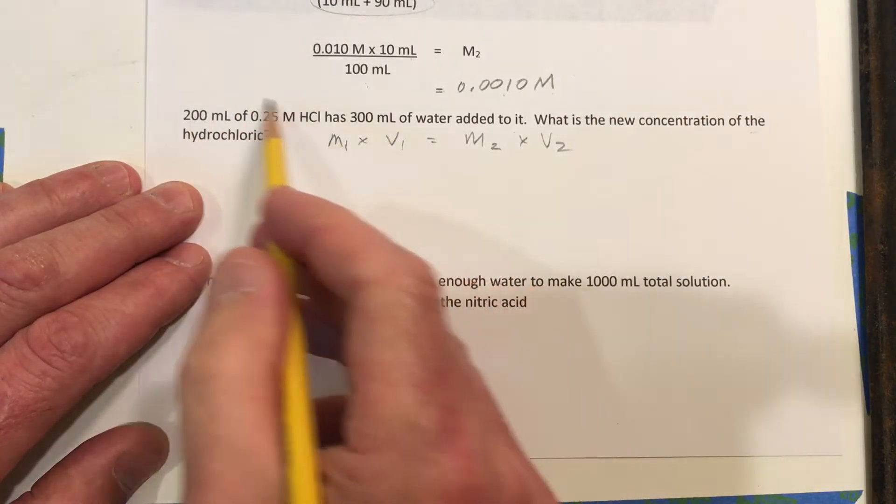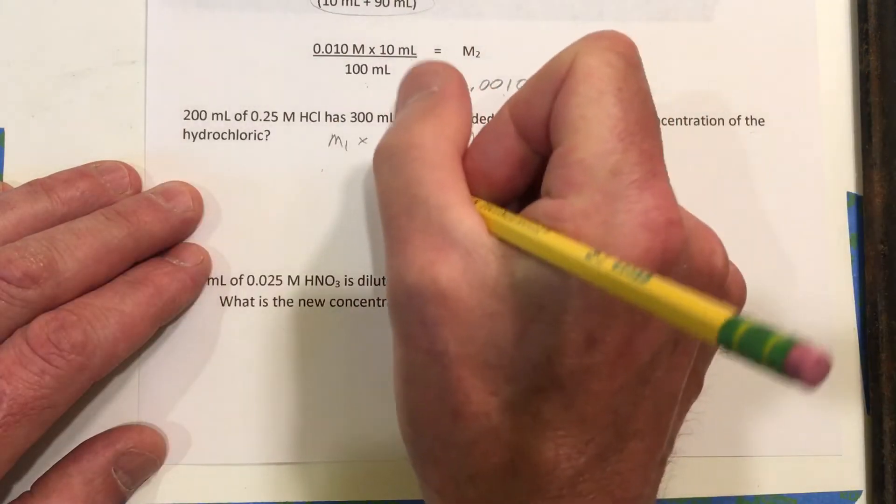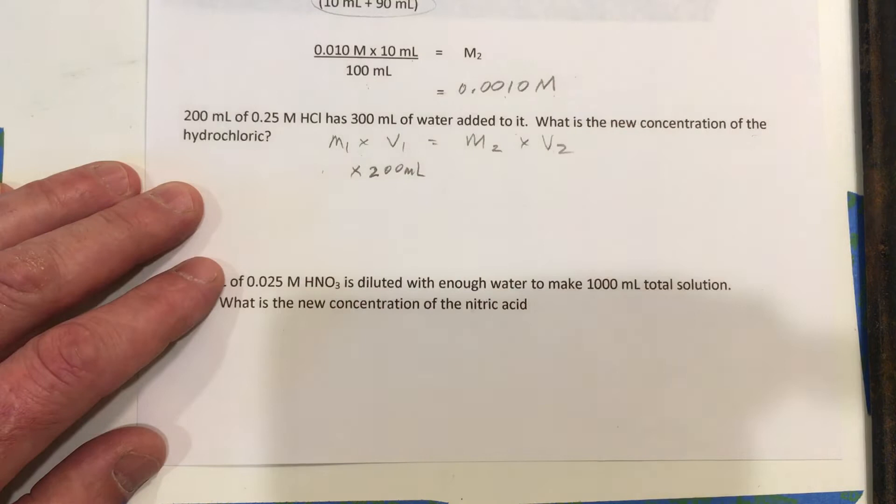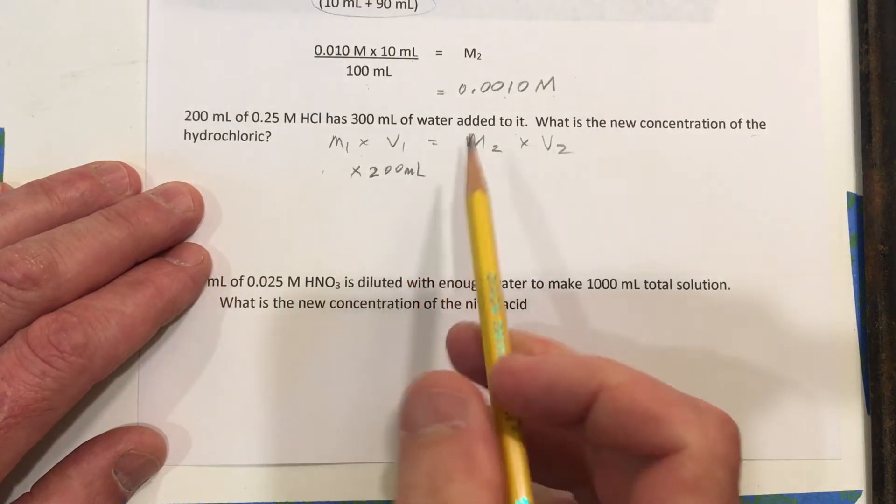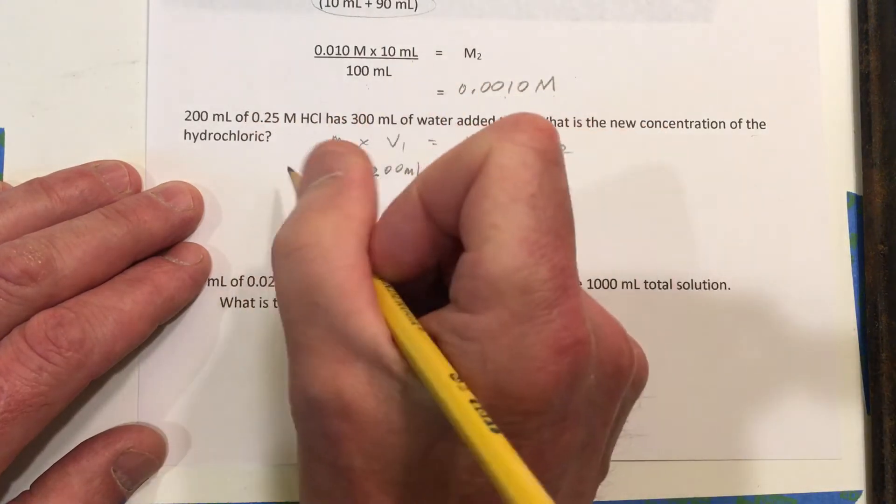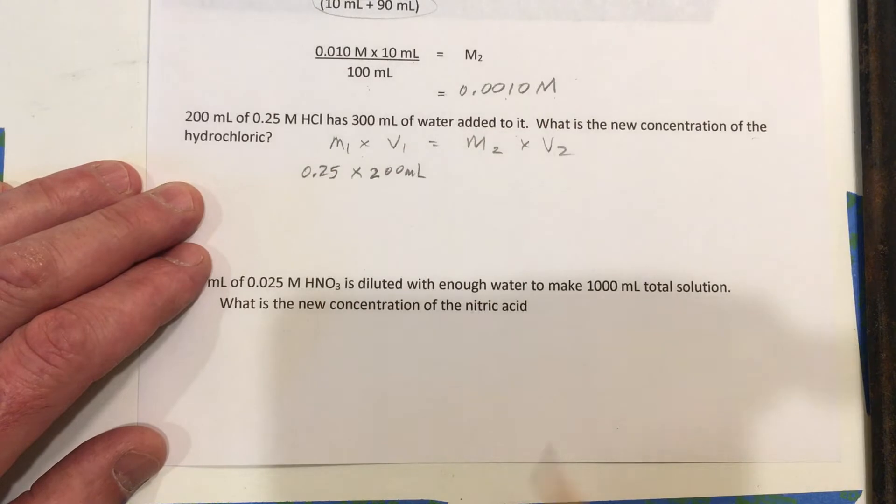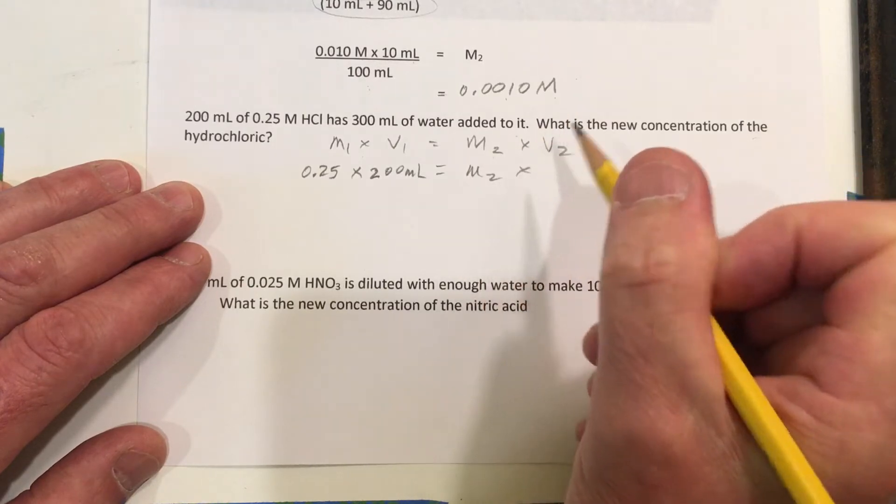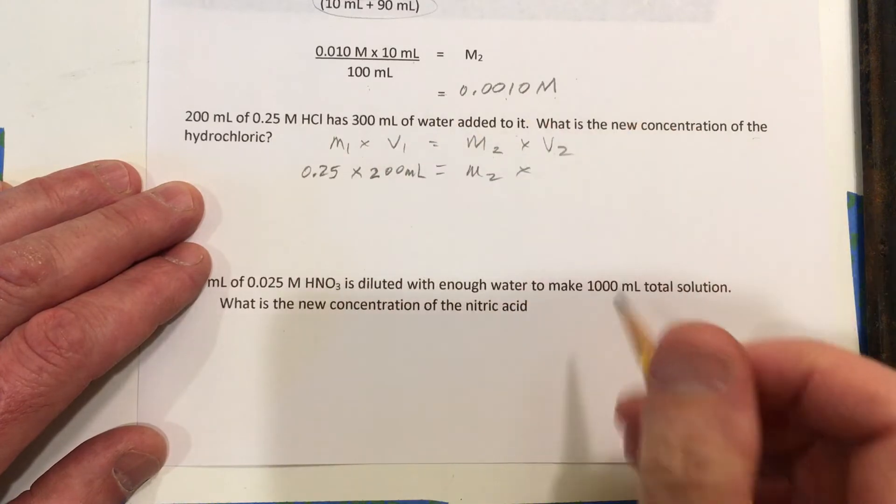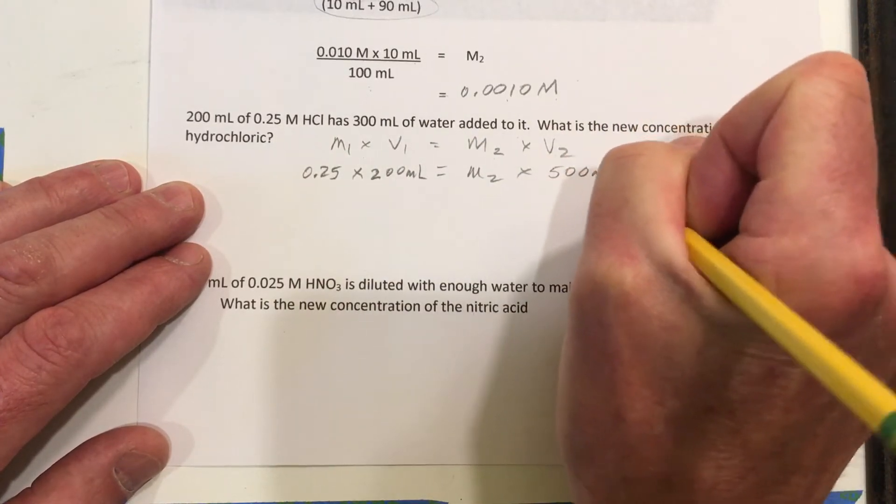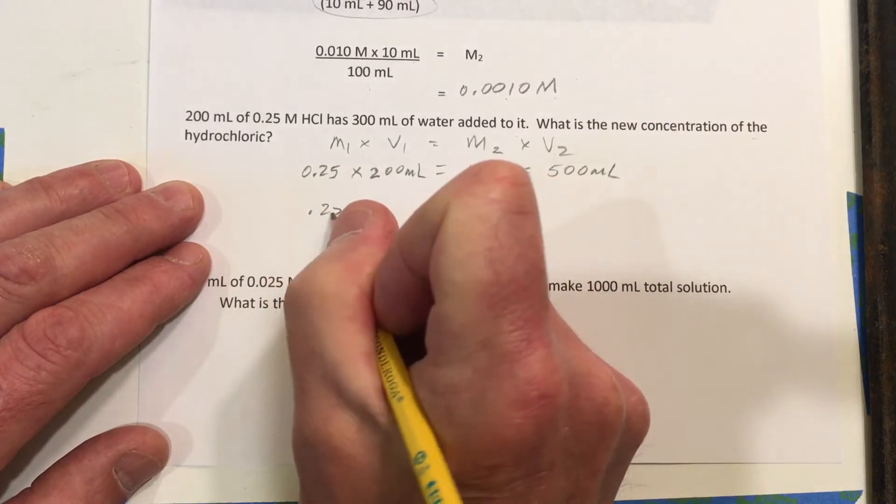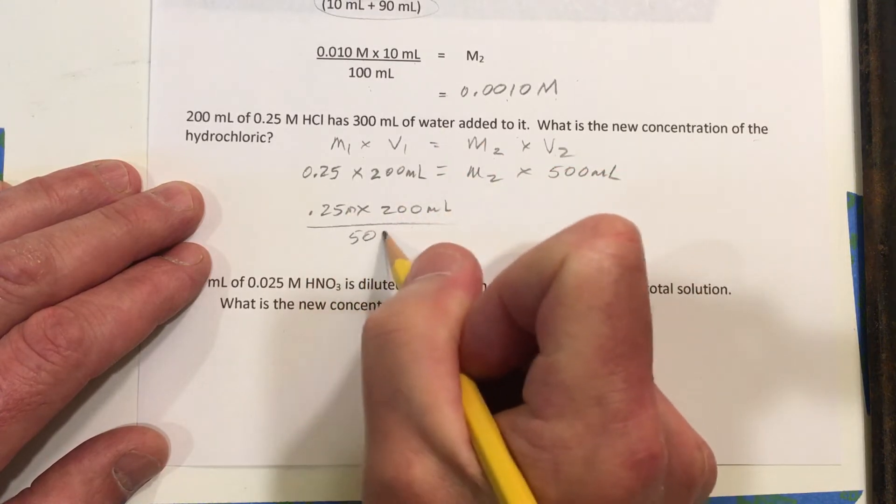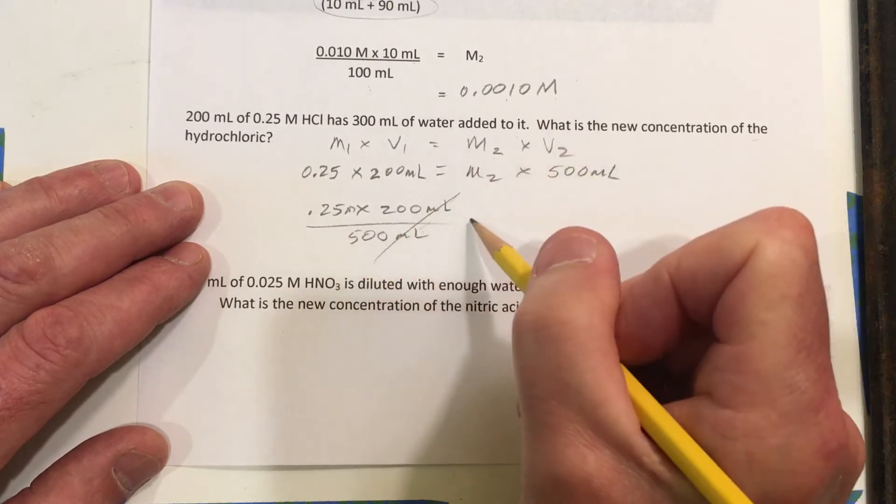So I'll call this the original. It doesn't really matter which you put on which side. I'm going to have 200 milliliters here. Also, it doesn't matter if you use milliliters or liters as long as you have the same unit on both sides. So I can't have milliliters here and liters over here. It has to be the same on both sides. 0.25 is the molarity equals the new molarity is what I'm looking for. And the new volume is 200 plus I added 300. So the new volume is 500 milliliters. So now I'm going to do 0.25 times 200 over 500 milliliters. The milliliters will cancel, leaving us with our molarity.